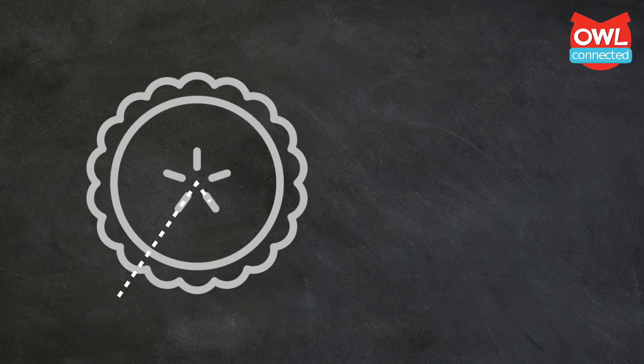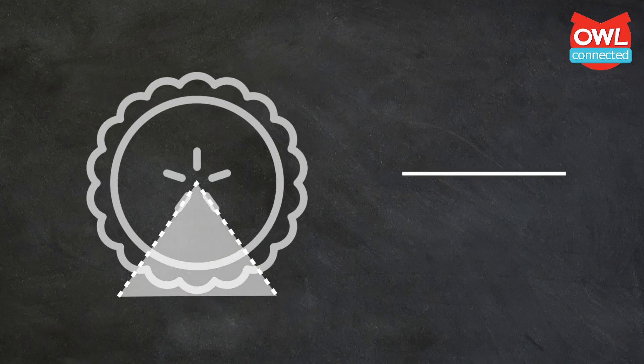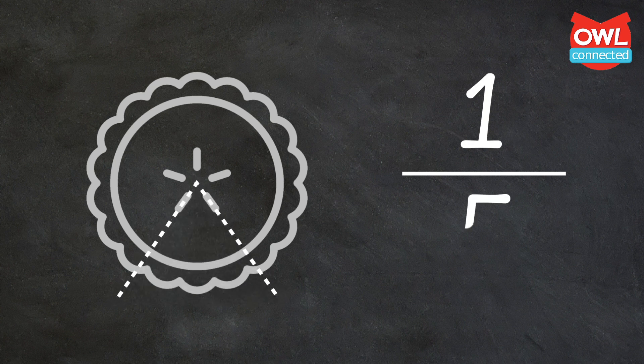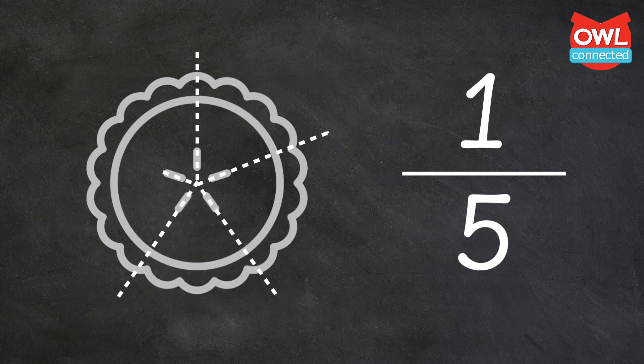In order to talk about Pi, we're going to have to unpack a few terms together. The first and most important of these is ratio. A ratio is a relationship that shows how many times one number is contained in another.